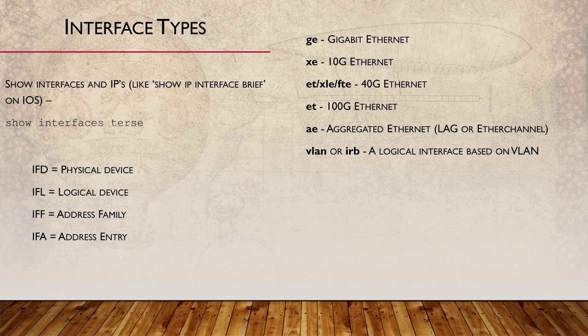VLAN and IRB are some of the logical interfaces that we'll come across. Both of these types map a VLAN to an IP address.